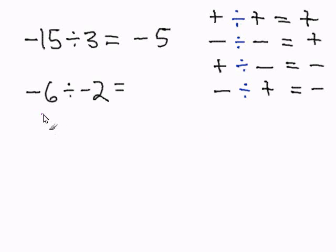The next problem. We have negative six divided by negative two. So we have a negative divided by a negative. That will get us a positive. So negative six divided by negative two will get us positive three. And this completes dividing integers.